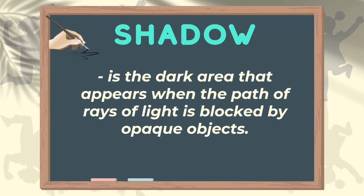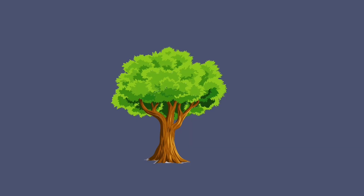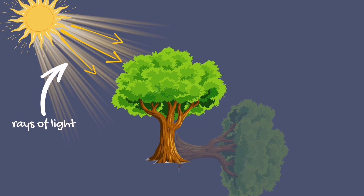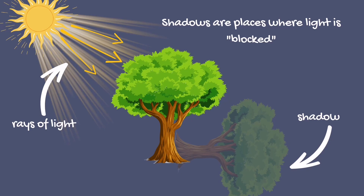Shadow is the dark area that appears when the path of rays of light is blocked by opaque objects. Shadows are formed when light strikes on opaque objects. Looking at this illustration, we have the tree, the sun with the sunlight or rays of light, and the shadow of the tree. The sunlight was blocked by the tree, and the outcome is the shadow of the tree.